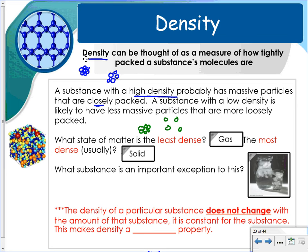The density of a particular substance does not change with the amount of that substance. It is constant for the substance. This makes density an intensive property. We learned about intensive and extensive property in the previous unit.